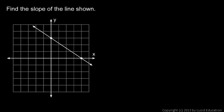Here's another example. We're told to find the slope of the line shown, and two points are already marked here. Those points conveniently coincide with places where the grid lines intersect, which makes it a little bit easier. Let's call the point on the left point one, and the one on the right point two, and imagine moving from point one to point two.